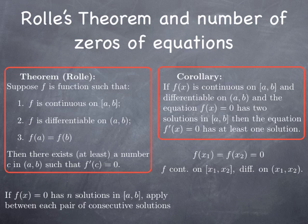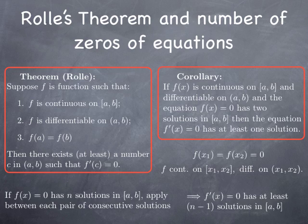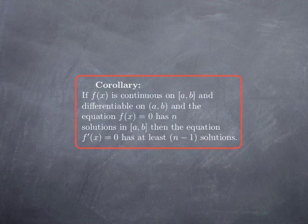Note that if instead we knew that the equation f(x) = 0 has n solutions in the interval [a, b], we could apply the same principle between each pair of consecutive solutions and we would find n minus 1 solutions to the equation f'(x) = 0. So we obtain that if we have n solutions to f = 0 in a certain interval where the function is continuous on the closed interval and differentiable on the open interval, then the equation f'(x) = 0 has at least n minus 1 solutions in that interval.